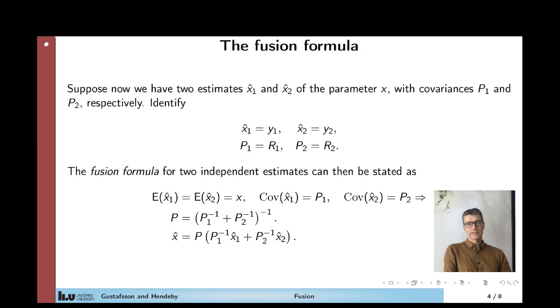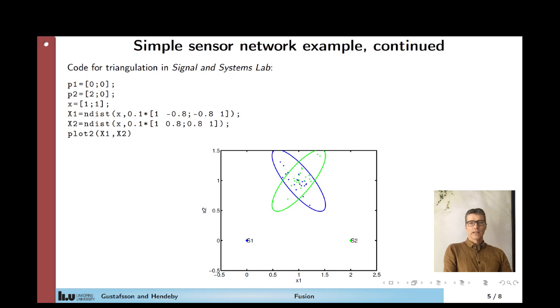So let's consider an example, the triangulation problem from the introductory lecture. So we have three ellipse reads corresponding to that you observe something with good angle distribution but poor range distribution from two different positions. And you want to combine these two ellipse reads into one. That's a perfect application of the sensor fusion formula.